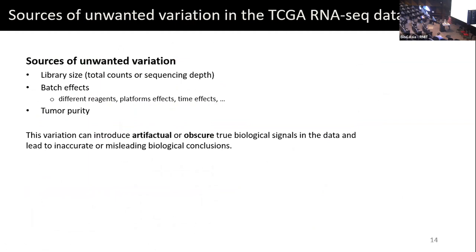What are the sources of unwanted variation in TCGA? It's not just TCGA — RNA-seq in general can have these sources. It's library size, which is a major unwanted variation in bulk RNA-seq, then batch effects from different platforms, and purity. Purity, for those working only on cancer cells and not the whole tissue, is going to be unwanted variation. You need to think about purity when working in this area.